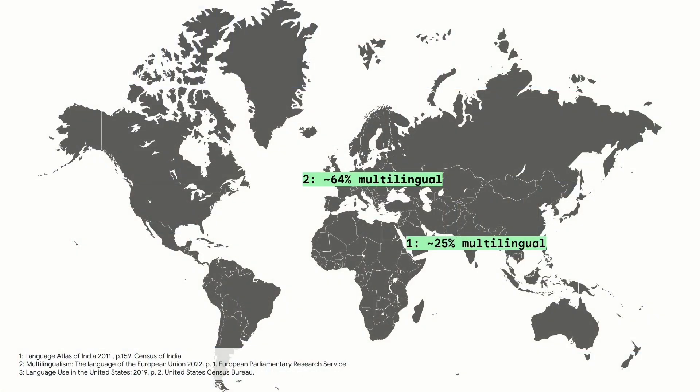Hey all, I'm Ash Noe. Let's talk about building for a multilingual world. Much of the world is multilingual — a quarter of India and two-thirds of the working adult population in Europe is multilingual. The multilingual population in the United States has increased nearly 200% over the last 40 years.